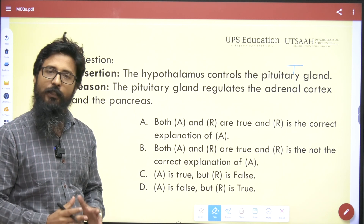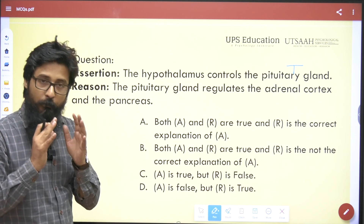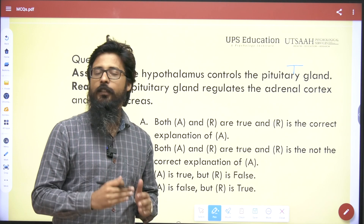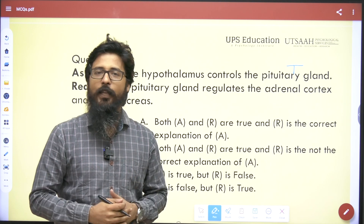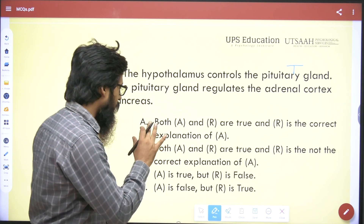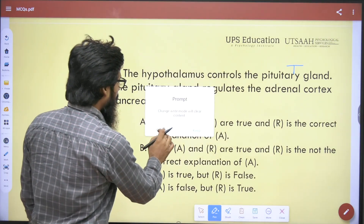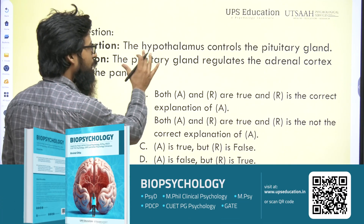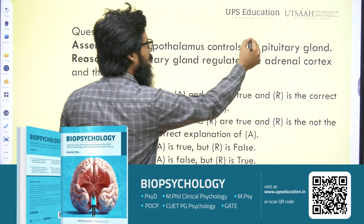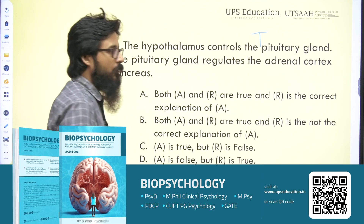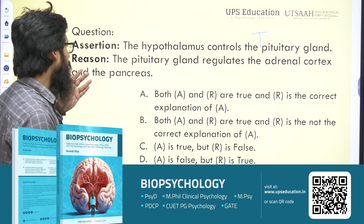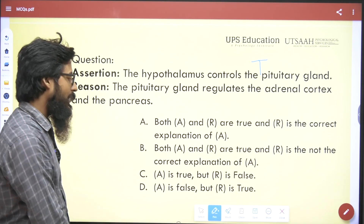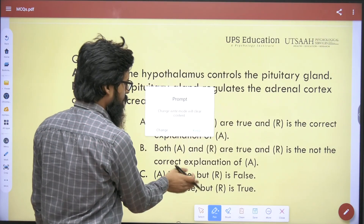When answering assertion-reason questions, first consider whether each statement is true or false. If both are true, then analyze whether the reason is the correct explanation of the assertion. Here, the assertion — hypothalamus controls the pituitary gland — is true. Now we have to identify whether the reason — the pituitary gland regulates the adrenal cortex and pancreas — is true or not.